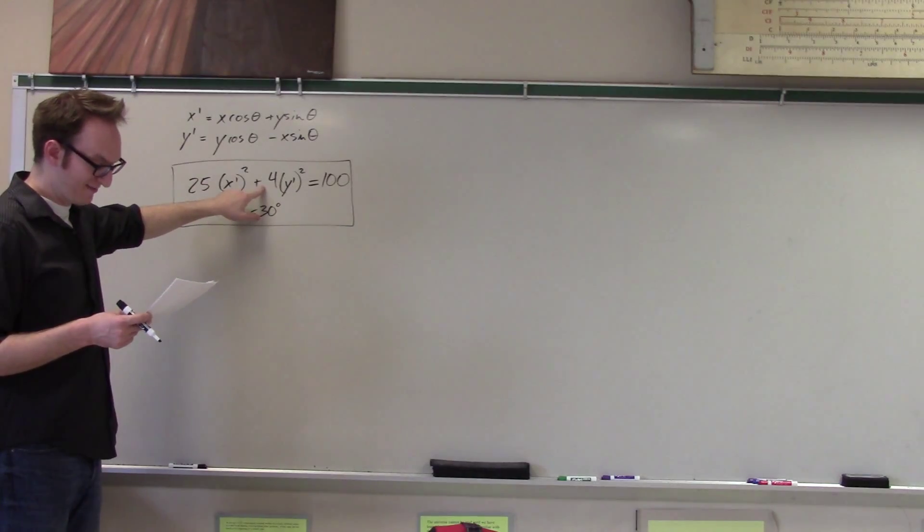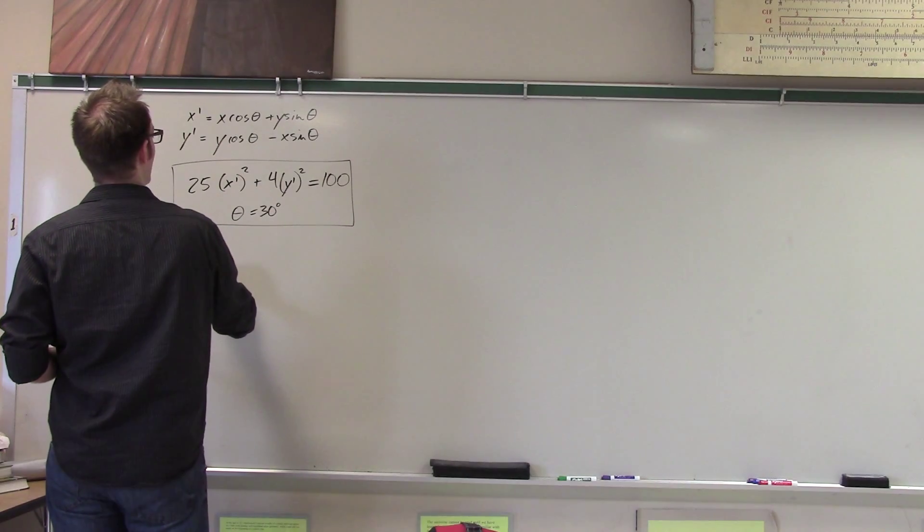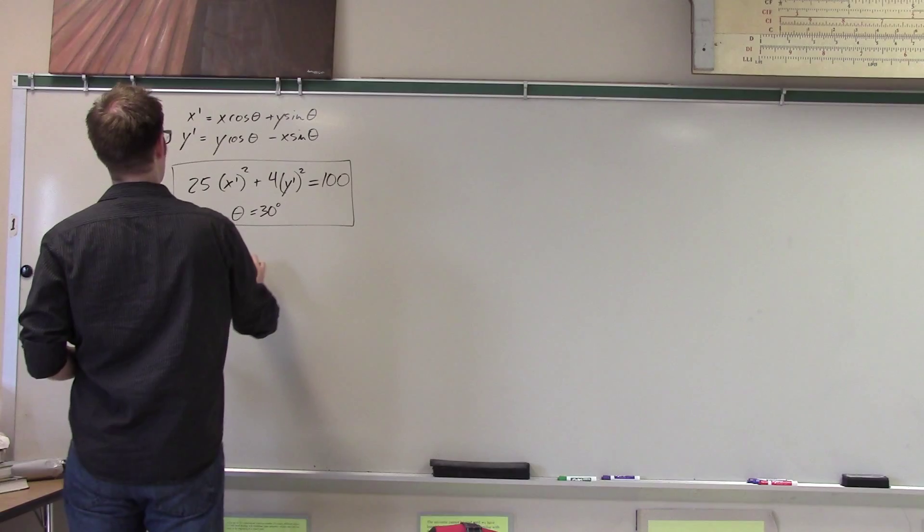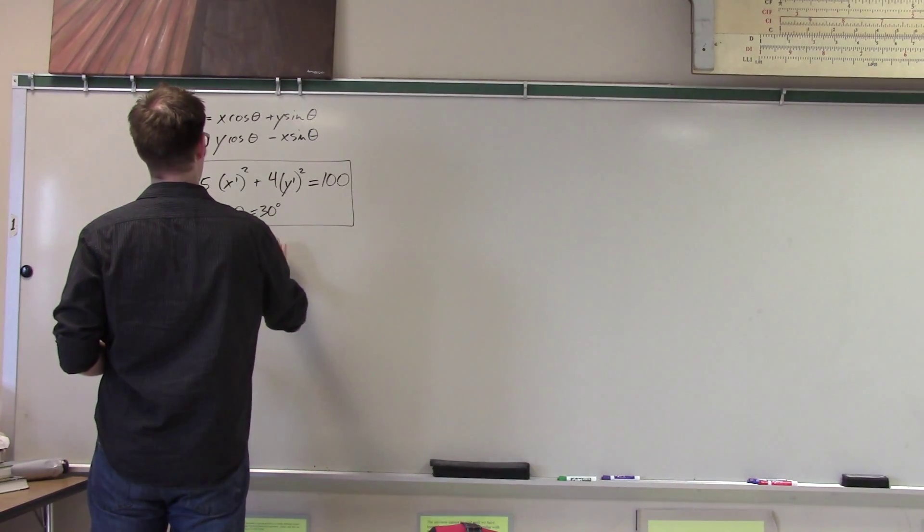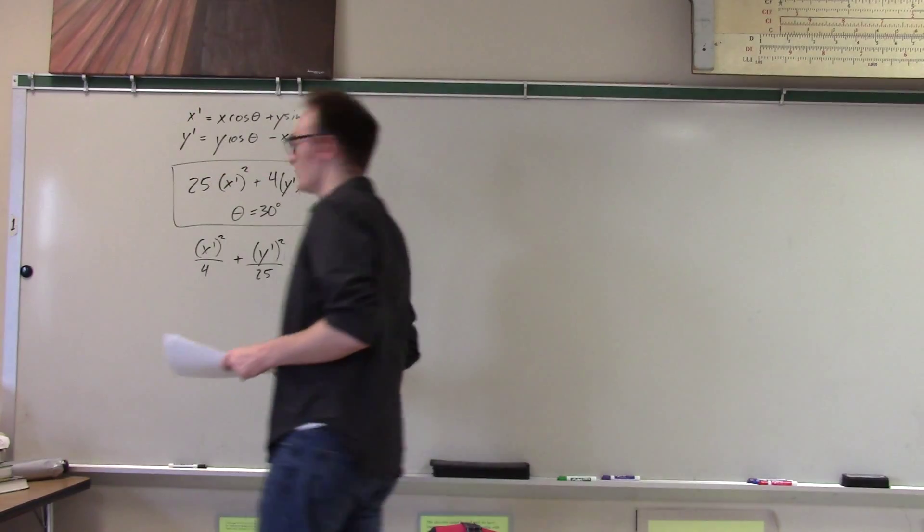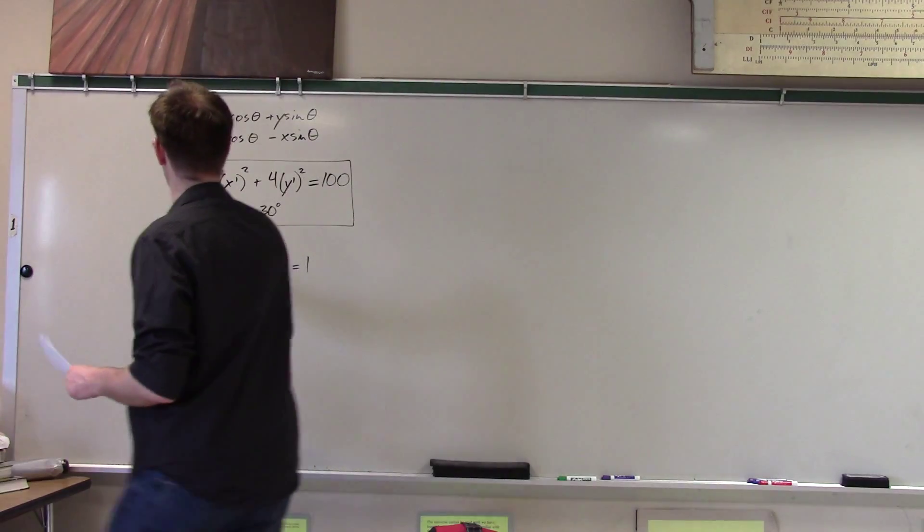So actually, if I wanted to graph this, I could do that right now. What is this? It's x prime squared over 4 plus y prime squared over 25 equals 1. So what does this conic look like? Well, I can draw a picture of it. Let's do it over here.